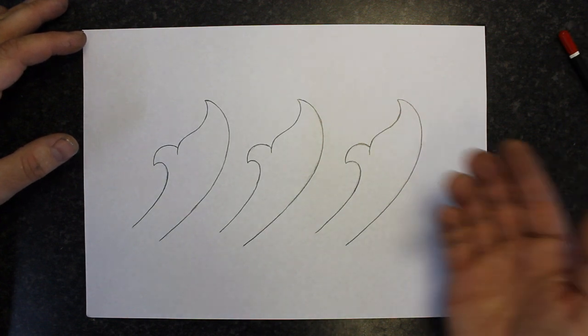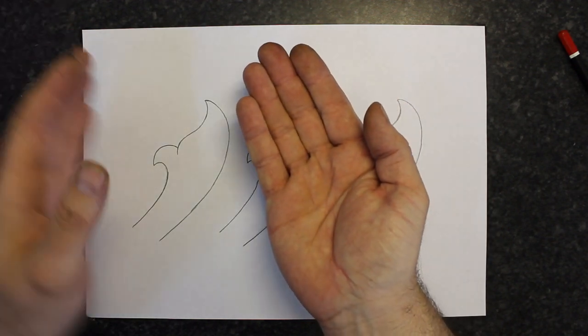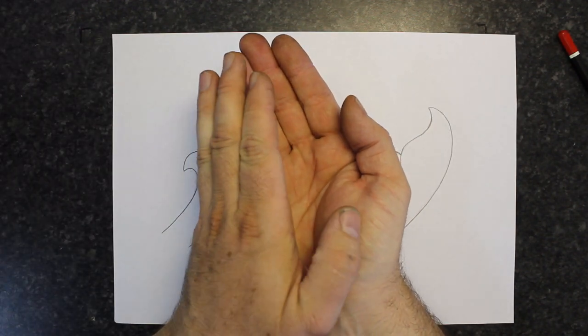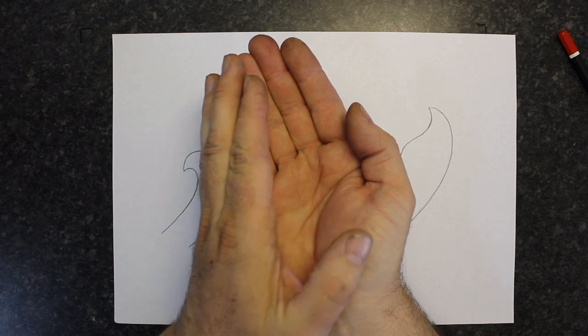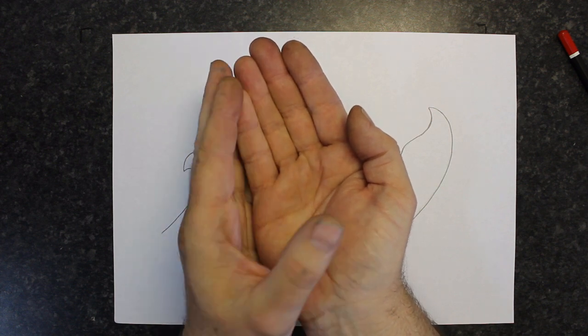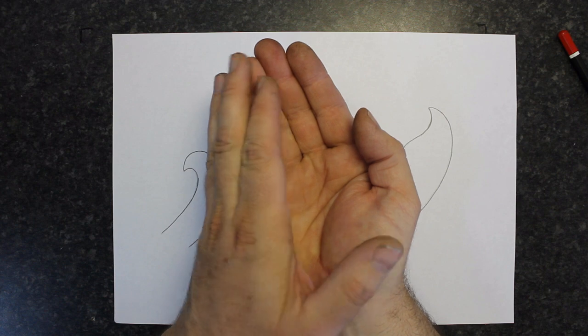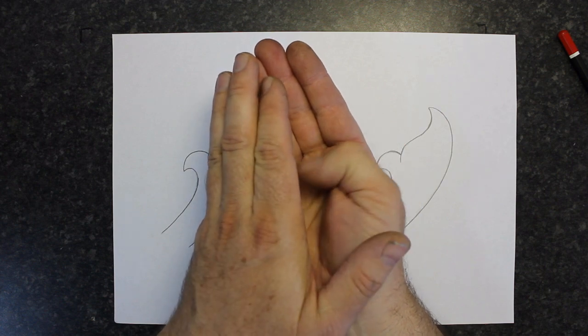In essence what we are creating, if this is the leaf shape, we are creating a fold over. That's an area of the leaf that is raised and curls over the rest of the leaf, creating a raised area and a shadow.